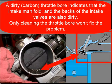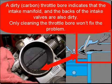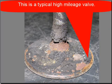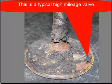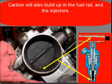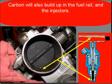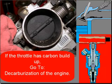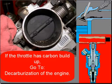A dirty throttle bore indicates that the intake manifold and the back of the intake valves are also dirty. Only cleaning the throttle bore will not fix the problem. This is a typical high mileage valve, and the carbon on this valve — some of which has already chipped off from disassembly — will disrupt the air-fuel mixture flow. Carbon also builds up in the fuel rail and the injectors. If the throttle has carbon in it, go to decarbonization of the engine.